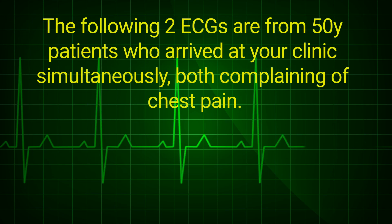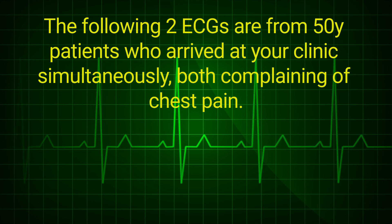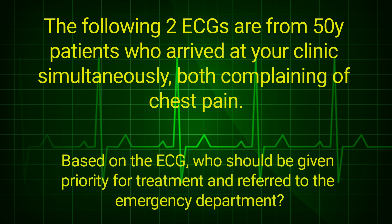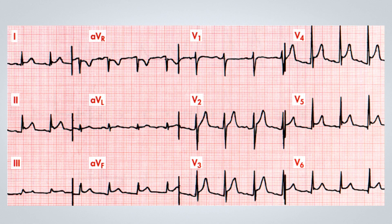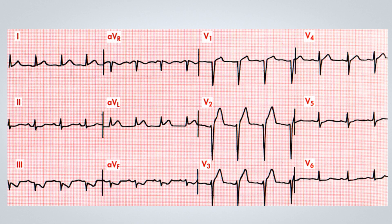Continuing with our lesson, we will now present two electrocardiograms. These ECGs are from two patients who arrived at your clinic simultaneously, both experiencing chest pain. Both patients are 50 years old, and you'll need to make a decision regarding their care. While both patients should be referred to the hospital, one of them will require immediate attention and prioritized referral. We will display the ECGs of these two patients for you to determine which one should be given priority in treatment and why. I suggest pausing the video to carefully analyze each ECG.